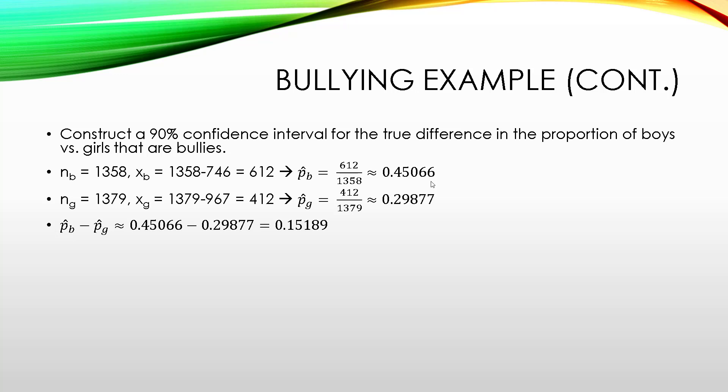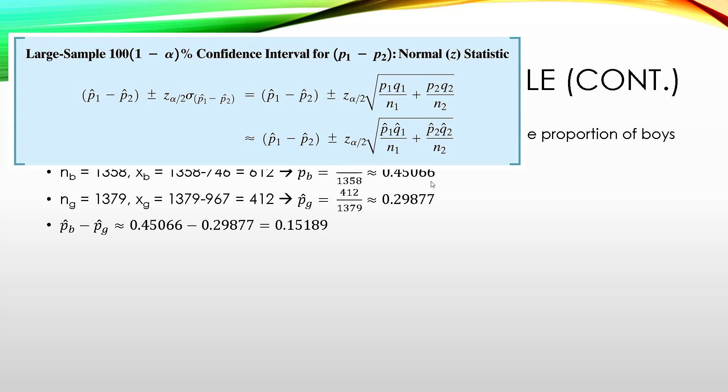We can take the difference in proportions, and that will be our point estimate for the difference in proportions of boys versus girls that are bullied, which is about 15%. Going back to our formula for confidence intervals, we take that point estimate for the difference and add and subtract the margin of error.